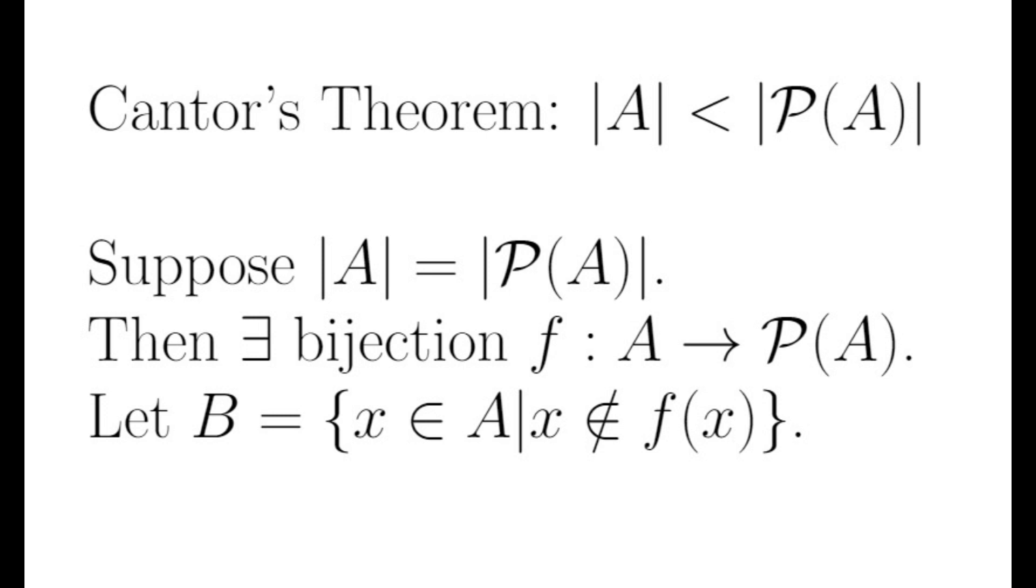So suppose A and its power set are exactly the same size. Then there is a one-to-one correspondence between the elements of A and the elements of the power set of A. This means that there exists a one-to-one onto function F, which we also call a bijection, that maps A to the power set of A.